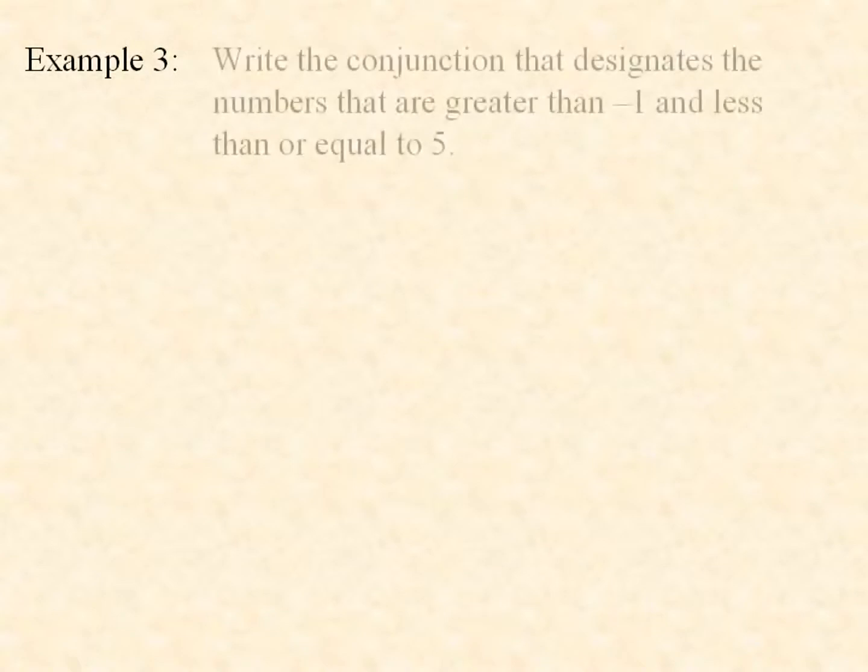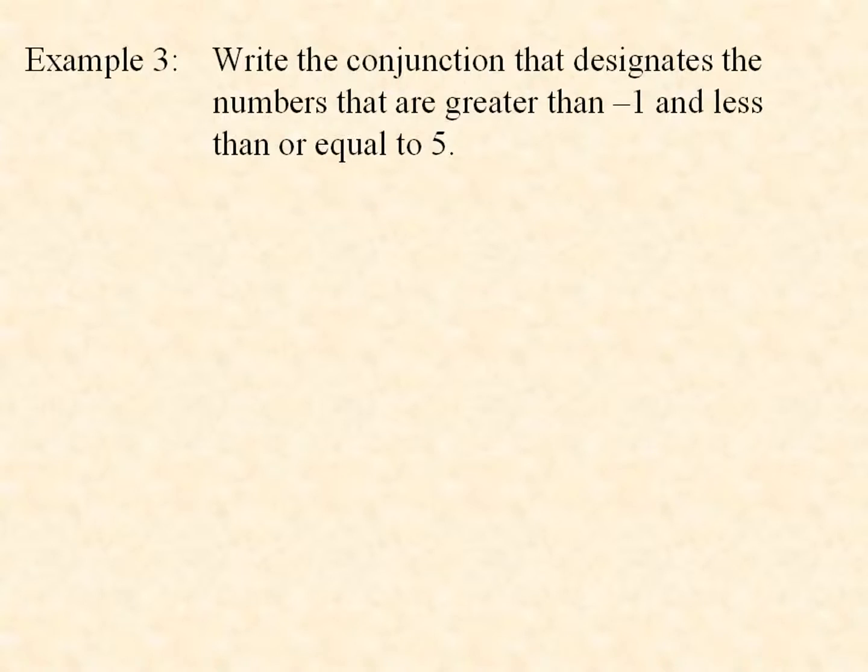Example 3. Write the conjunction that designates the numbers that are greater than -1 and less than or equal to 5. It looks like this: -1 < x ≤ 5.